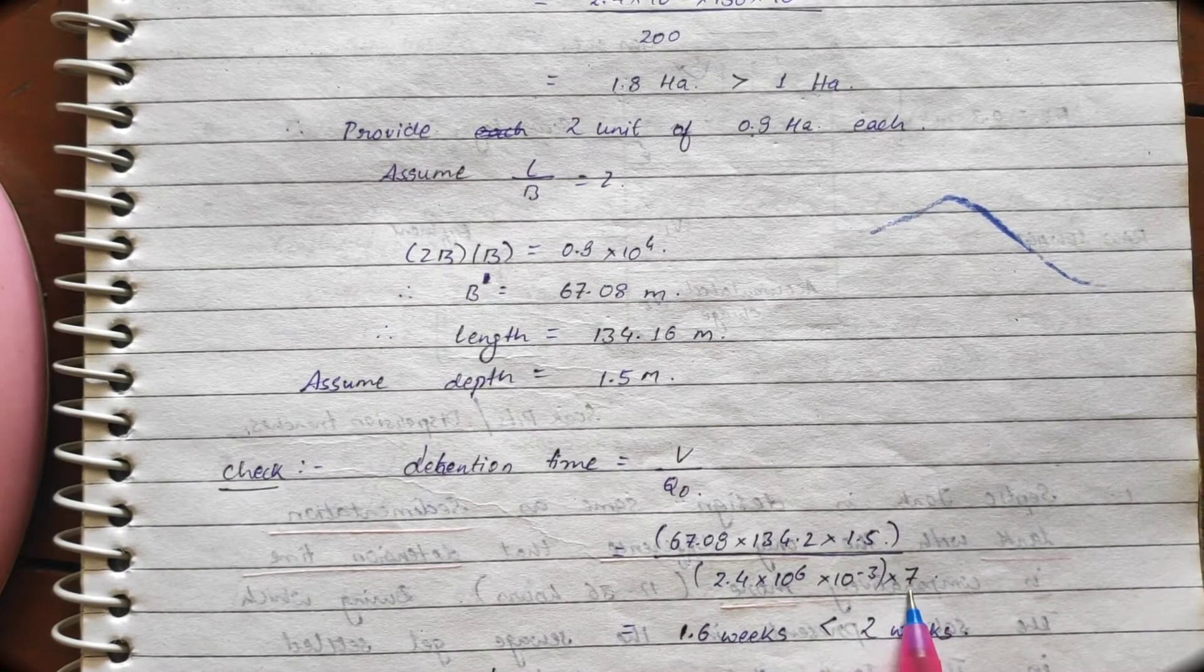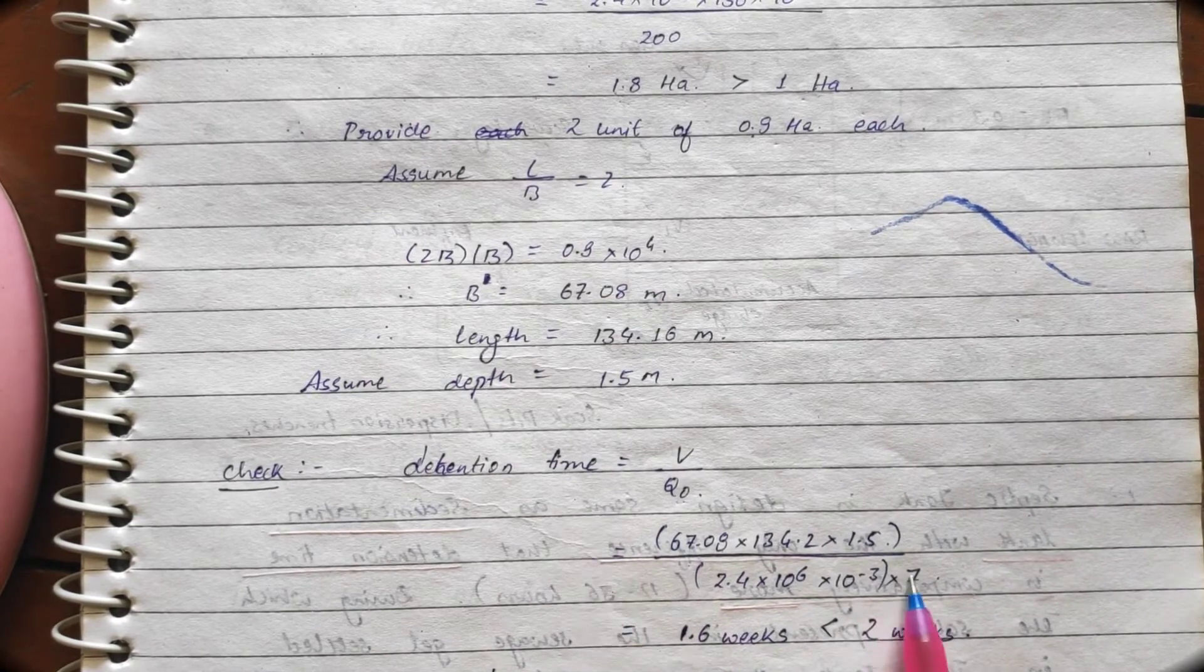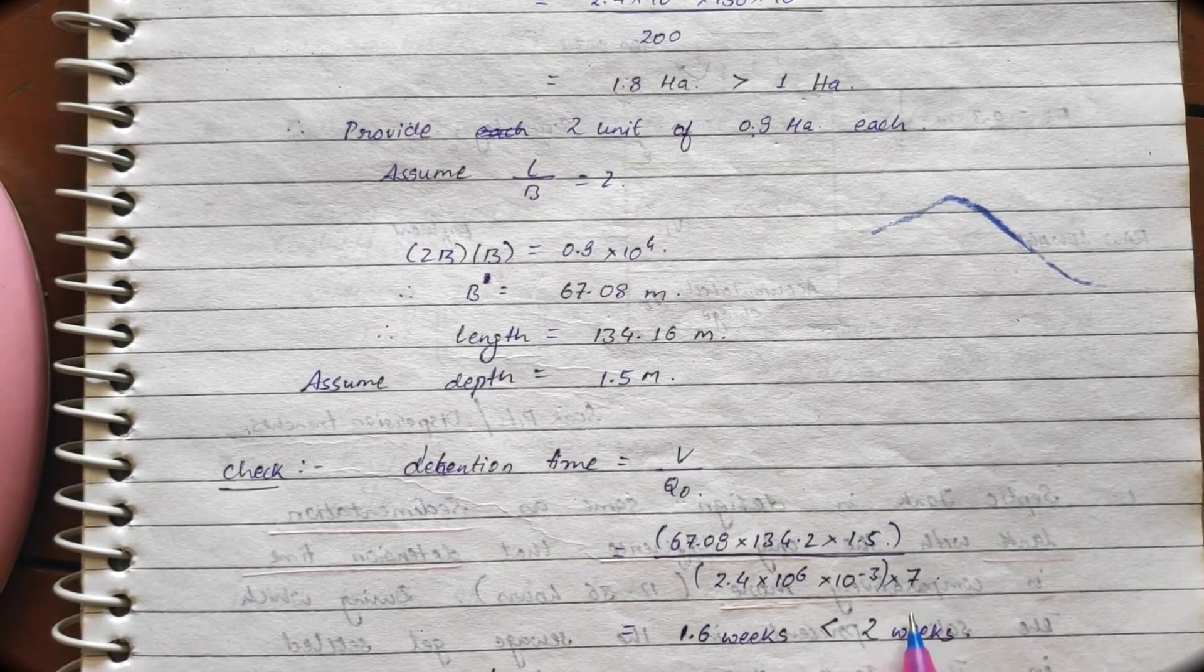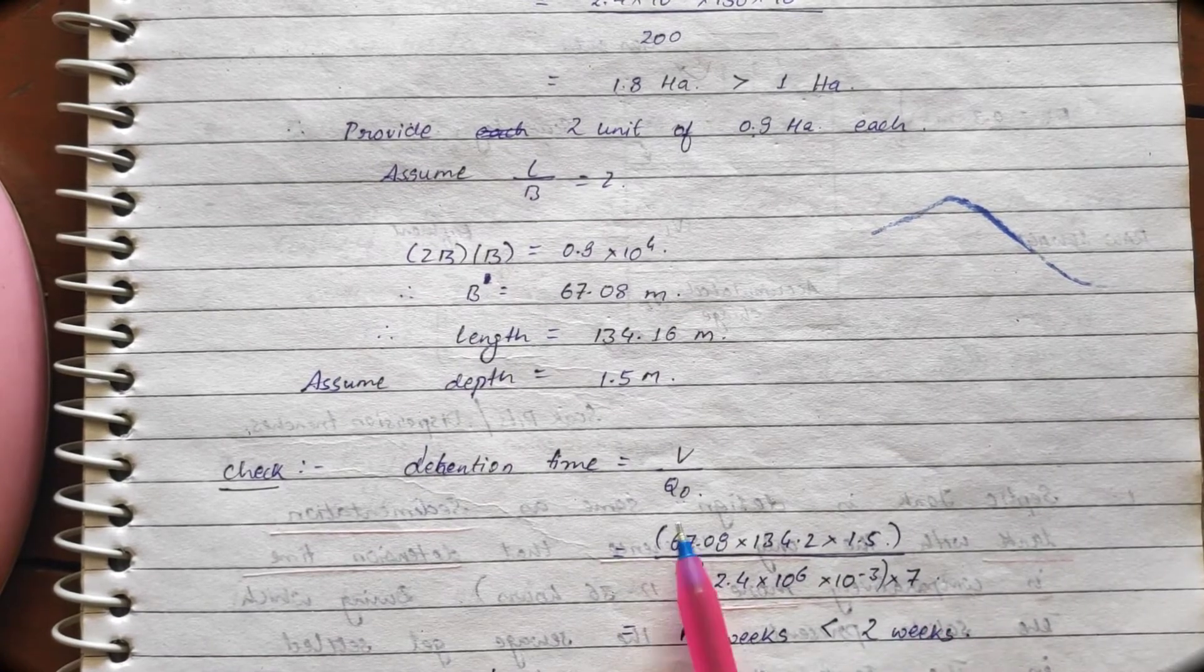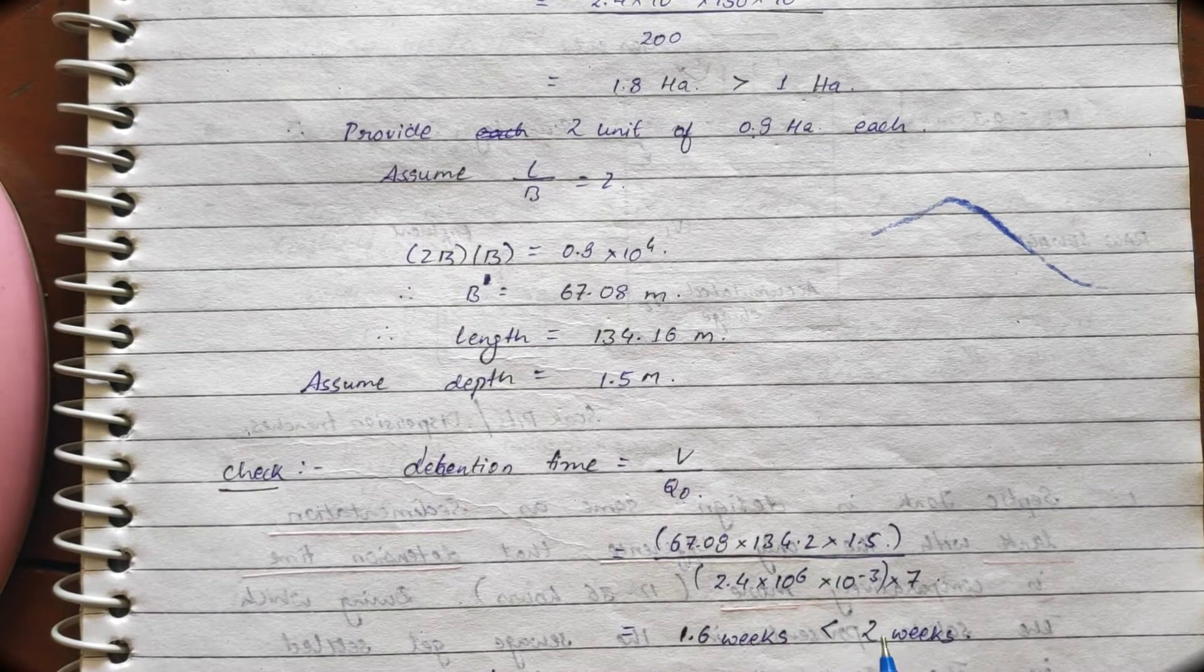Now, why we have multiplied this with 7? Because, we have to calculate the detention time in weeks. So, that's why we multiplied this with 7. So, it comes out to be 1.6 weeks. Which is less than 2 weeks.